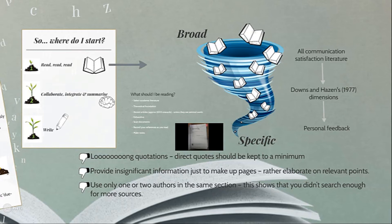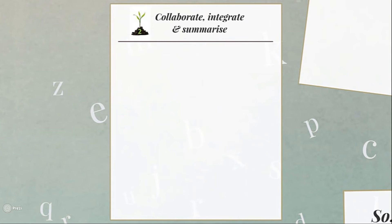If you read as much as you should in phase one, you will have more than one source to integrate in all sections you present. We'll talk more about integrating sources shortly. Now let's look at phase two: collaboration, integration, and summarization. In this phase, it's very important to see the links in your literature review with the rest of your study. Tutorial Letter 101 tells you that Assignment 3 is extremely important because the methodology, measuring instruments in particular, and the empirical part of the study are dependent on a solid literature review.